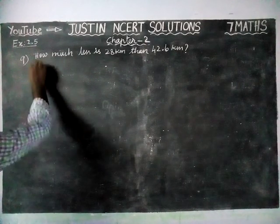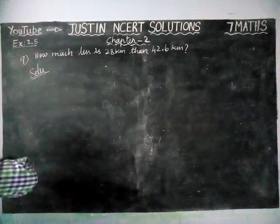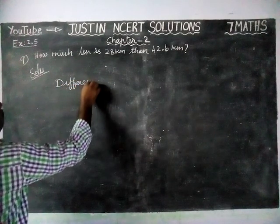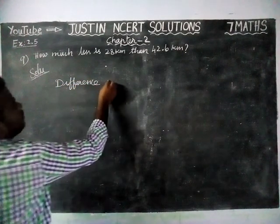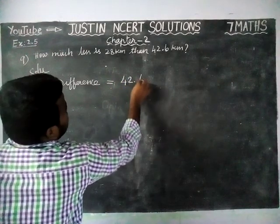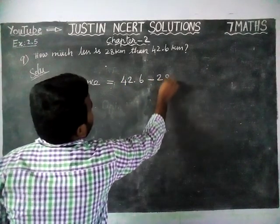So now, we have to find the difference. Difference is equal to 42.6 minus 28 km. We are going to do that subtraction.